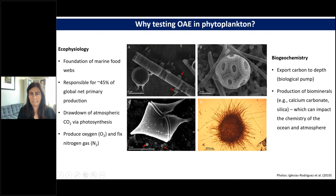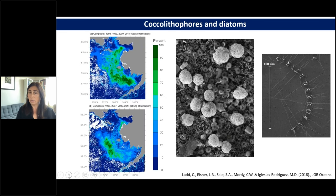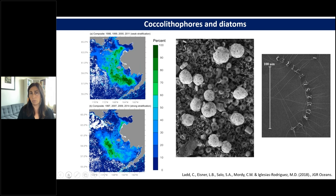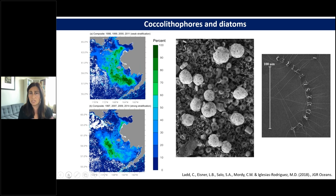Coccolithophores are very prominent in the Bering Sea, where they form blooms. We published a paper in 2018 in JGR Oceans with Carol Ladd as lead author, studying through remote sensing techniques these coccolithophore blooms in relation to environmental conditions including stratification. Coccolithophores have been a focus of our attention, but diatoms are really important and they appear together in the seasonal dynamics and annual succession of blooms — typically diatoms bloom first, followed by coccolithophores. They occupy distinct niches, and understanding the effects on these two organisms is very interesting.